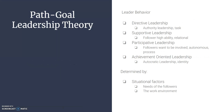There are four types of leader behavior in the path-goal theory: directive leadership, supportive leadership, participative leadership, and achievement leadership. The appropriate behavior is determined by situational factors — specifically, what are the needs of the followers and what is the work environment like?